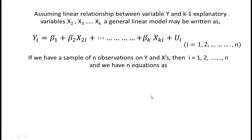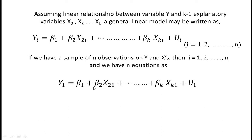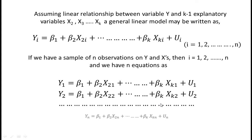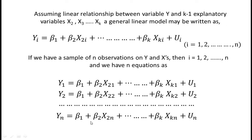If we have a sample of n observations, i goes from 1 to n and we have n equations. The first observation gives: y1 = β1 + β2*x21 + ... + βk*xk1 + u1. For the second observation: y2 = β1 + β2*x22 + ... + βk*xk2 + u2. And for the nth observation: yn = β1 + β2*x2n + ... + βk*xkn + un.